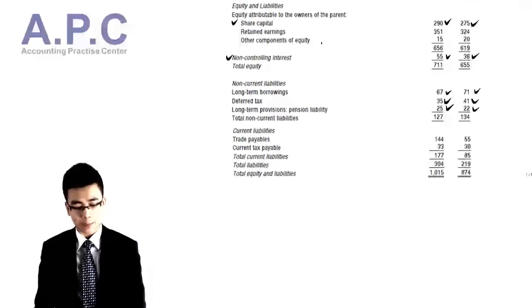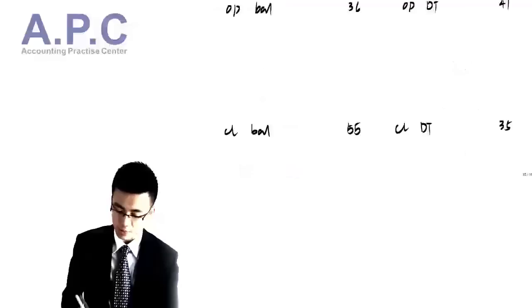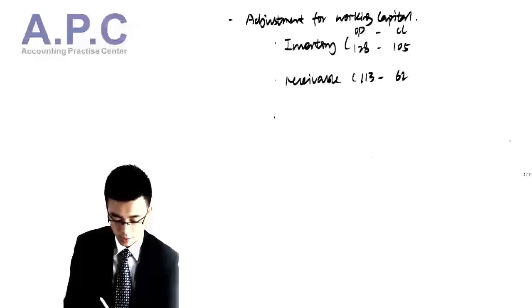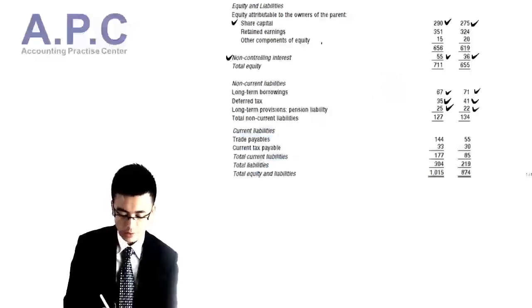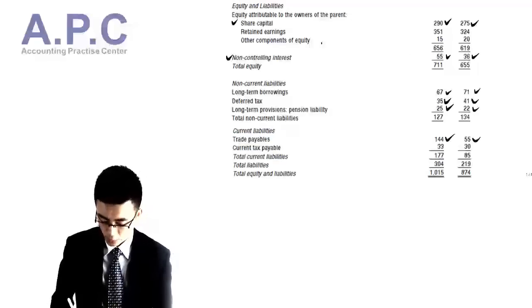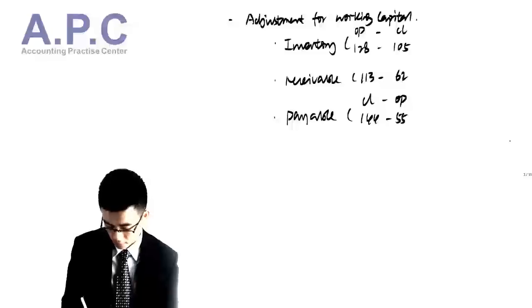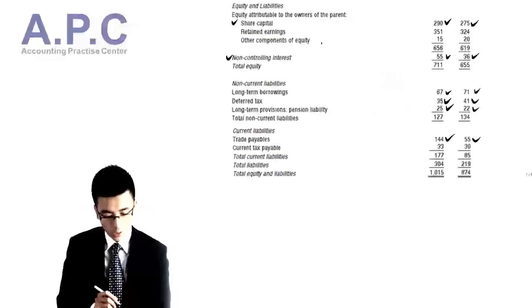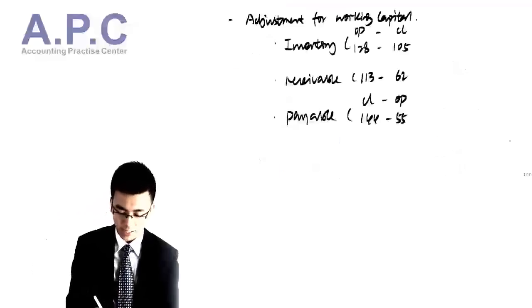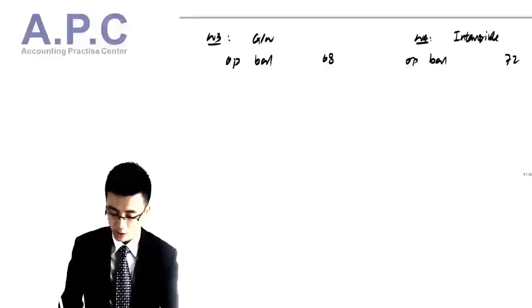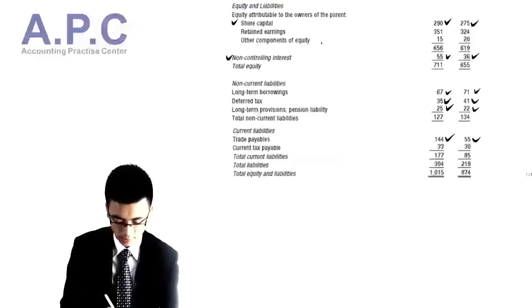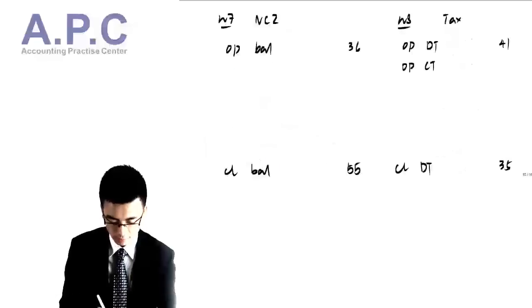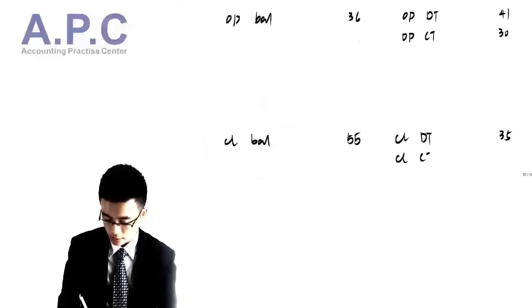Trade payables will be included in the adjustment for working capital in cash flow from operating activities. Since this is a liability, we take closing minus opening: closing is 104 minus 55. For current tax payable — included in our tax working number 8 — opening current tax payable is 30 and closing is 33.